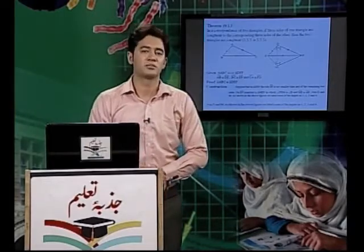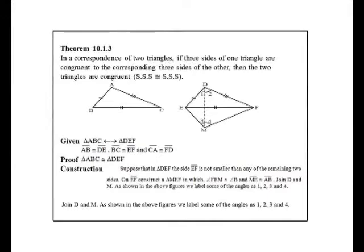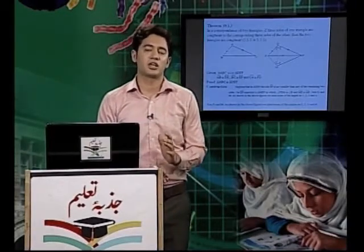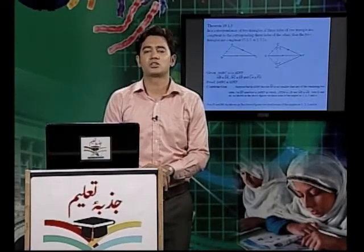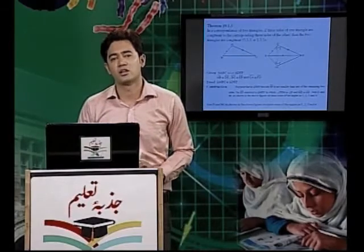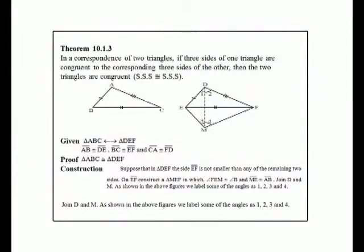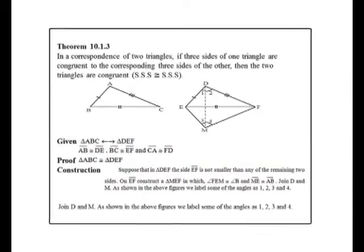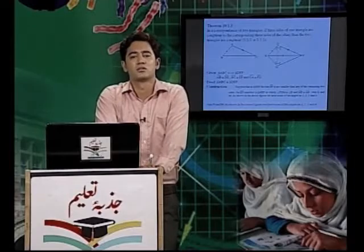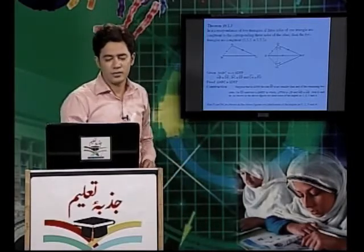ابھی تک ہم نے اس chapter کے دو theorems study کیے ہیں۔ ان theorems کی اپنی اپنی applications ہیں۔ یہ آپ کے ان concepts کو review کر رہے ہیں جو آپ پہلے discuss کر چکے ہیں۔ مثلاً کہ SAS (Side Angle Side)، SAA (Side Angle Angle) یہ postulates آپ study کر چکے ہیں۔ اب ہم اس chapter کا تیسرا اور بہت اہم theorem دیکھتے ہیں۔